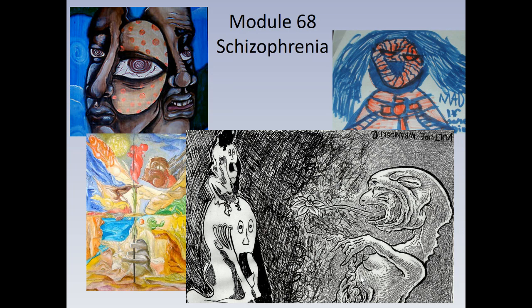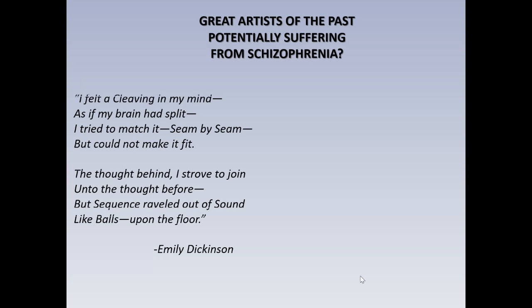I'm going to show you a couple of slides during this first part, and then we'll look at a case study of an actual painter who lived about 100 years ago — a late 19th century painter called Lewis Wayne. He did some really interesting paintings, and you can see his schizophrenia developing over the course of his work over the years. Great artists of the past, potentially suffering from schizophrenia.